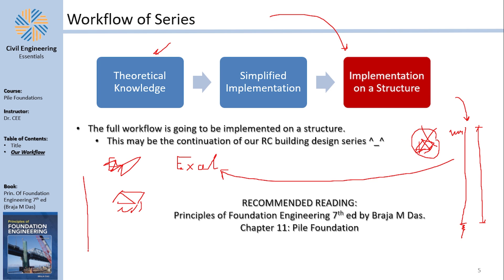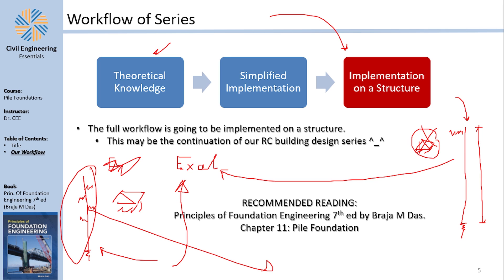The core of our pile modeling approach is the replacement of pin and fixed supports with column or beam elements supported by springs. How those springs are calculated will be covered in future videos. We then check the reactions against the geotechnical capabilities of the pile. If not sufficient, we improve by adding more piles, increasing length, or increasing diameter. You can also study ahead and look at how to model piles using springs in Robot.